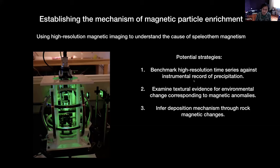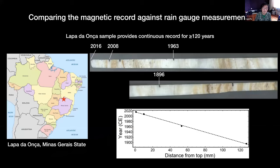Because historical records are relatively short — one to two hundred years in most places — we need as much data as possible in that small interval of time, and that's where the high resolution comes in. A second strategy is using textural evidence, which came up in Yumin's talk. When you can isolate the magnetic signals at the sub-millimeter scale, you can compare them to textural changes in the speleothem. Finally, since this is a rock magnetic conference, you can use rock magnetism changes in the speleothem through time to infer its origin.